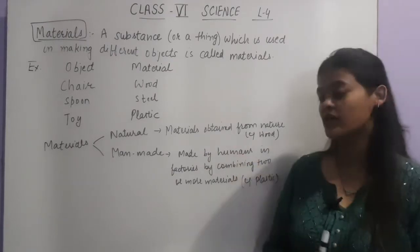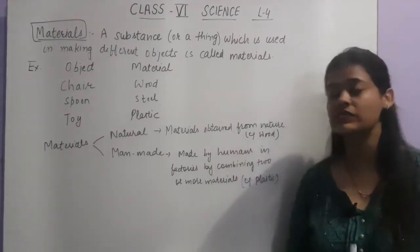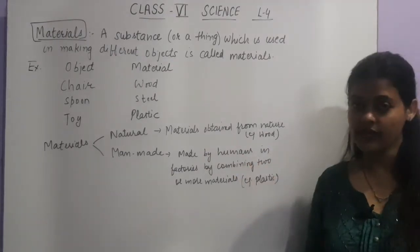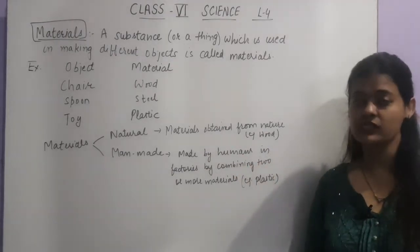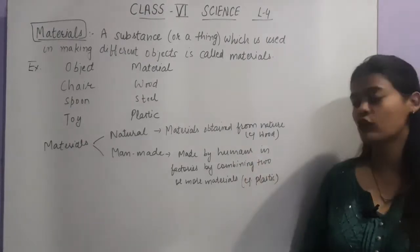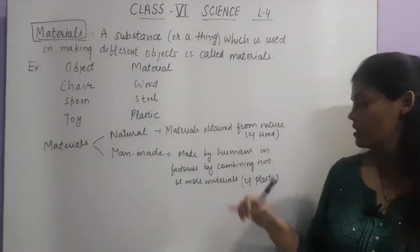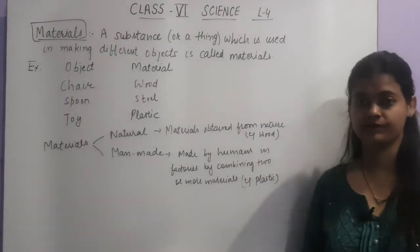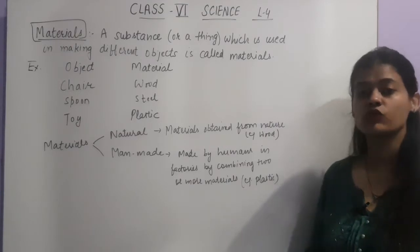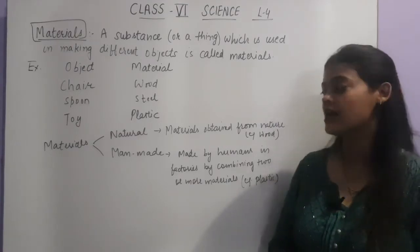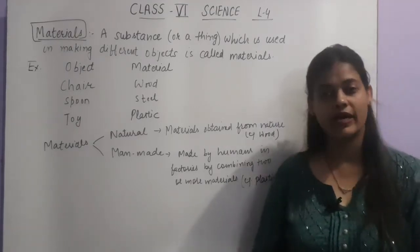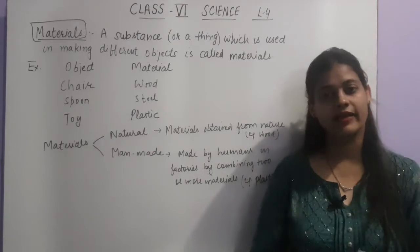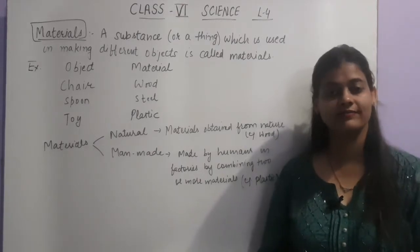The second type is man-made. The materials which are made by humans in factories by combining different materials are called man-made materials. For example, plastic and steel. So these are the examples of man-made materials. Let's now see the next topic.